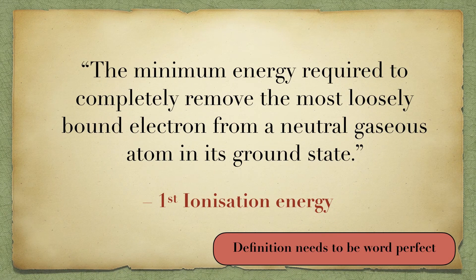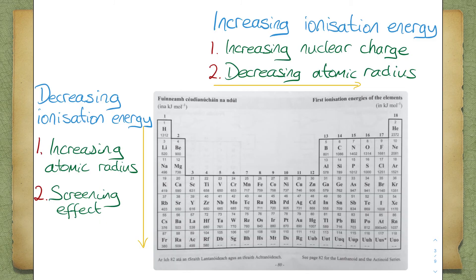The first ionization energy is defined as the minimum energy required to completely remove the most loosely bound electron from a neutral gaseous atom in its ground state. The further the outermost electron is from the nucleus, the easier it is to remove it. This is because the attractive force is not as strong. We can conclude that as the atomic radius increases, the easier it is to remove an electron from the outer orbit.